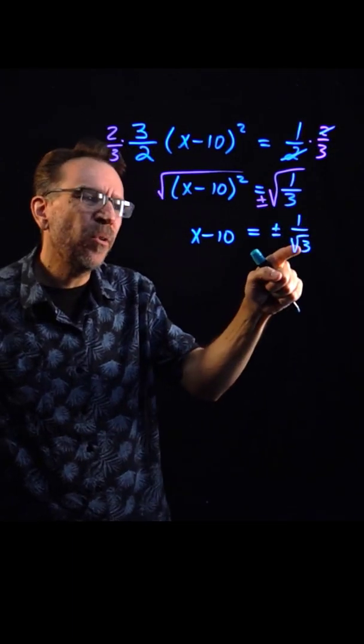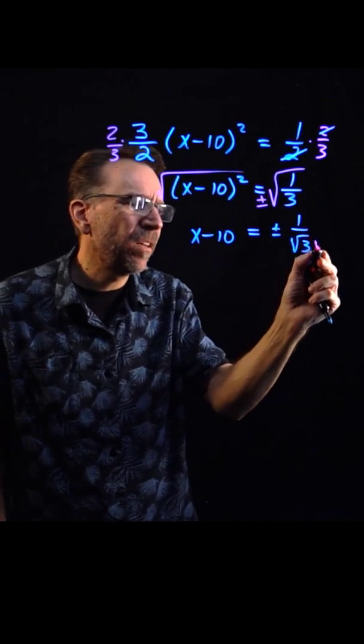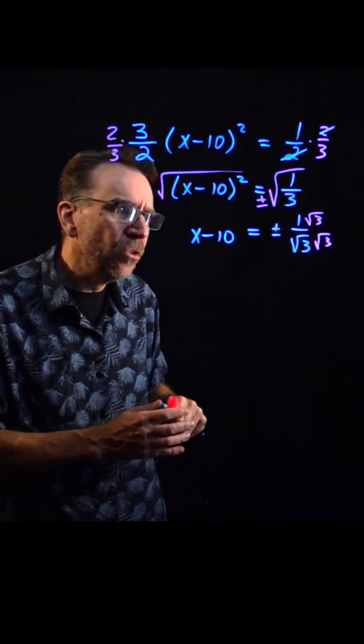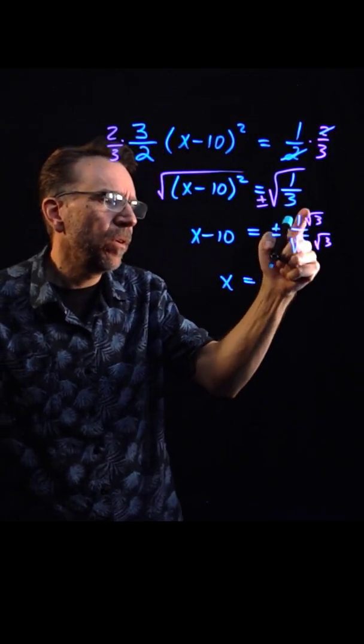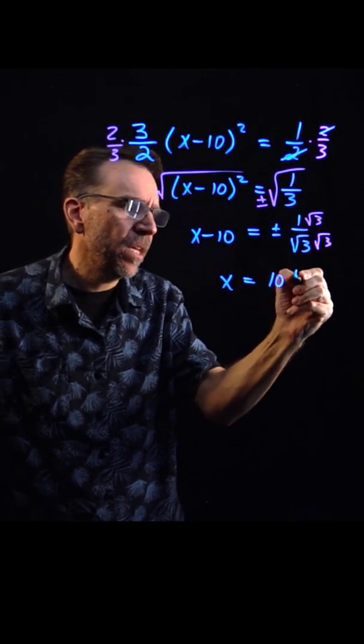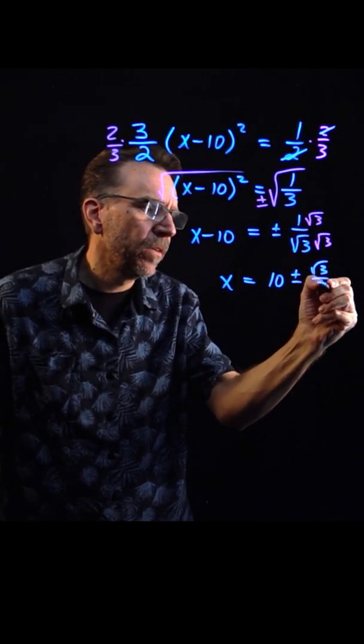Now the square root of one is just one. At this point we probably want to rationalize the denominator. So I would multiply numerator and denominator there by square root of three and also add the ten. So ten plus or minus square root of three over three.